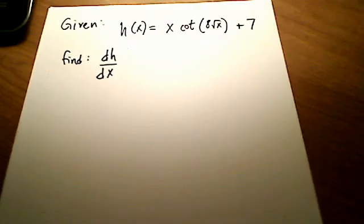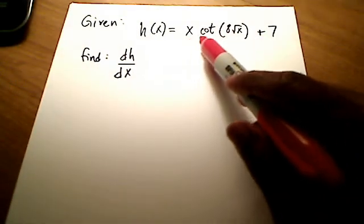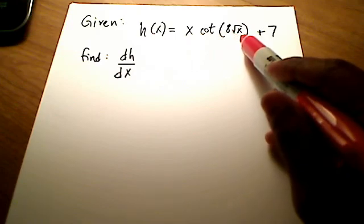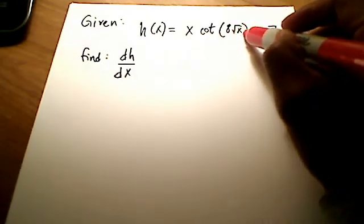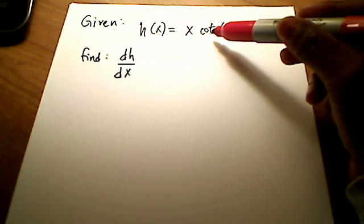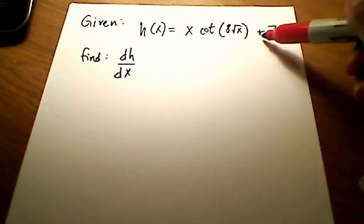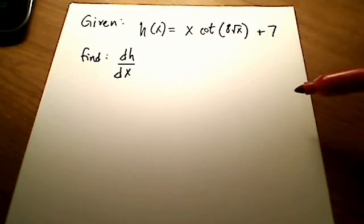We're given a function h(x), which is x times the cotangent of 8 square root x. Now this here, this 8 square root x is the argument for cotangent. This is the angle for cotangent. And then plus 7, some constant hanging out here at the end.